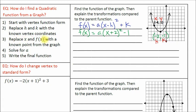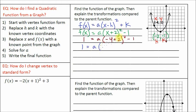Step three: replace x and f of x with a known point from the graph. Our known point is negative 4, 1. The y value of the known point is 1, which goes where f of x was. Our x value is negative 4, so we plug it in: 1 equals a times the quantity negative 4 plus 2, squared, minus 1. Now step four says solve for a. Let's do PEMDAS — parentheses first. Negative 4 plus 2 is negative 2, squared, minus 1.